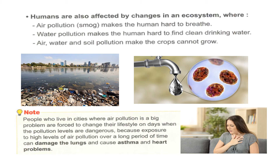Humans are also affected by changes in an ecosystem. Air pollution makes it hard for humans to breathe. Water pollution makes it hard for humans to find clean drinking water. Air, water, and soil pollution make it so crops cannot grow.